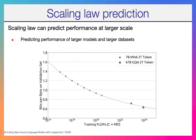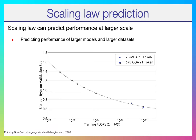Loss pretty much determines performance. Scaling law can predict performance long way ahead — the x-axis in log scale shows the number of FLOPs, and this power law relationship holds true across really long ranges.